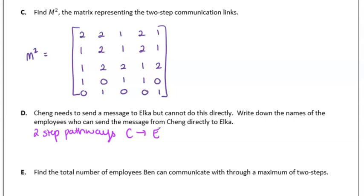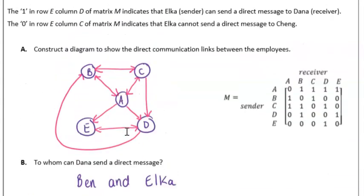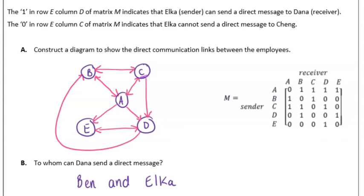If we look at our two-step matrix here, from C to E, we have two possible two-step pathways. This is where it becomes easier to go back to our diagram to see what were those two pathways. Remember, we're going from Cheng to Alka. Looking at our diagram here, Cheng can speak to Dana who can speak to Alka, so there's one. Cheng can also speak directly to Amara who can speak to Alka, and there's our second pathway.